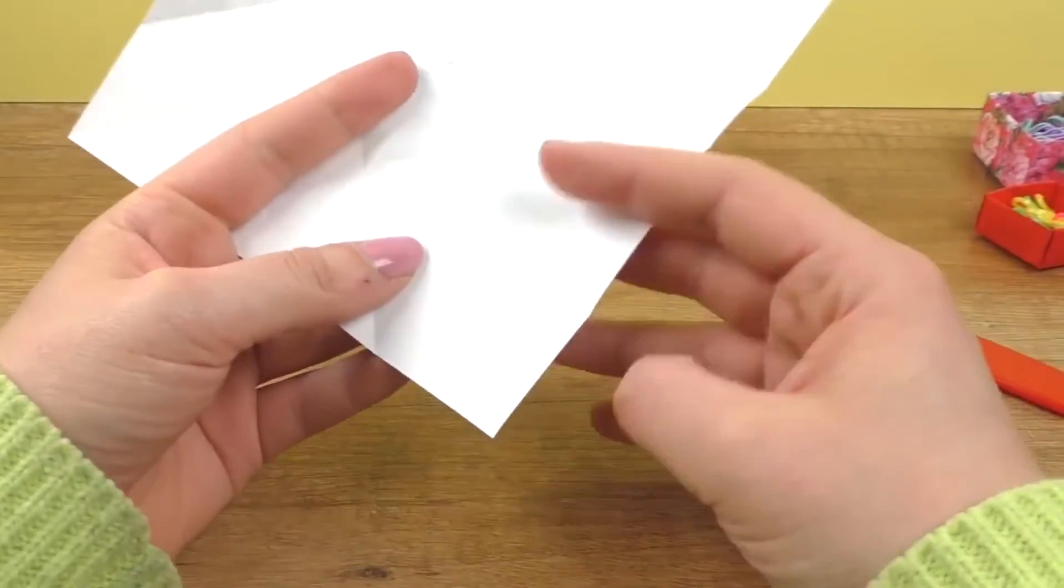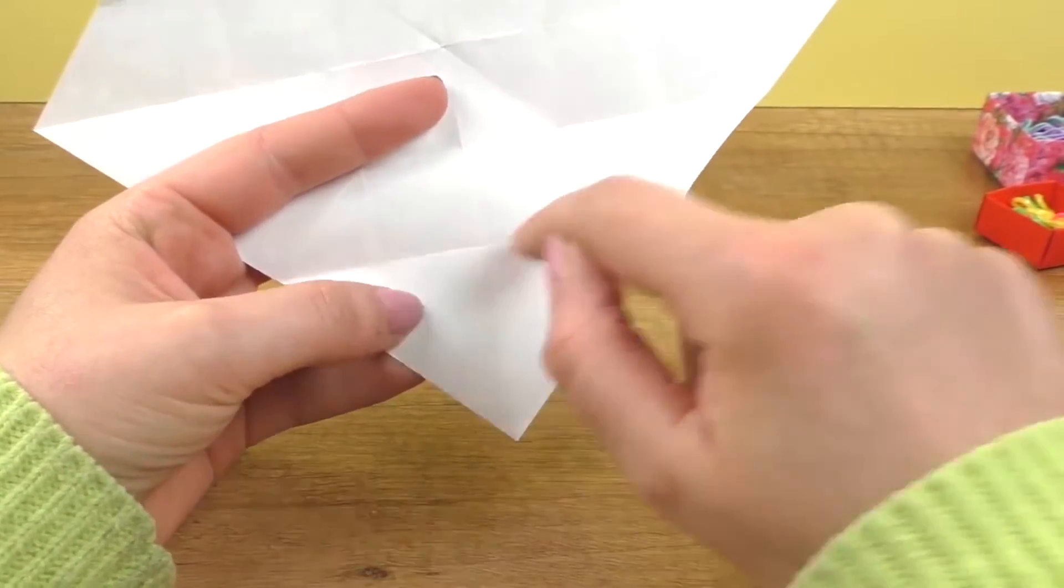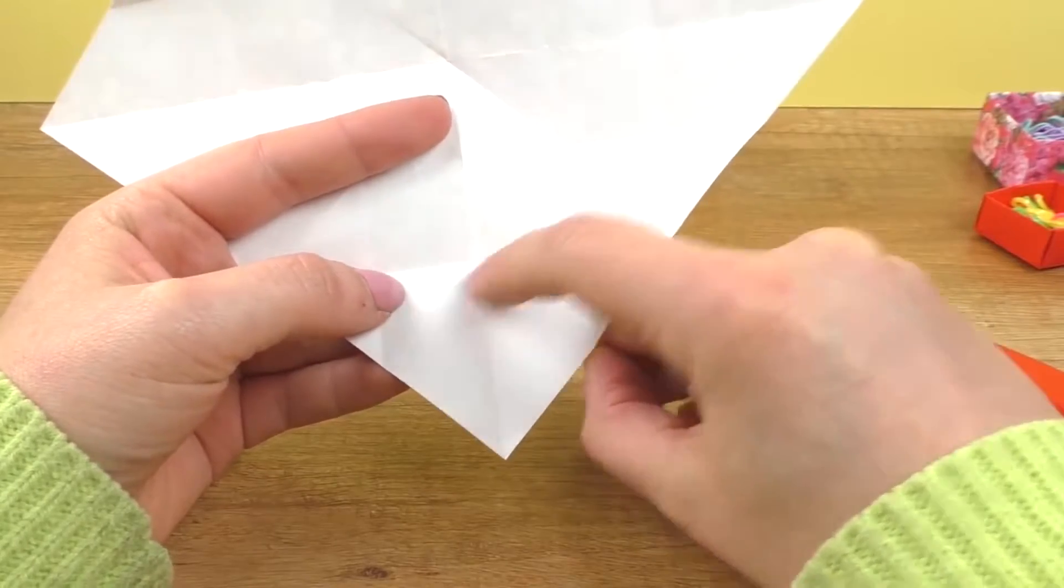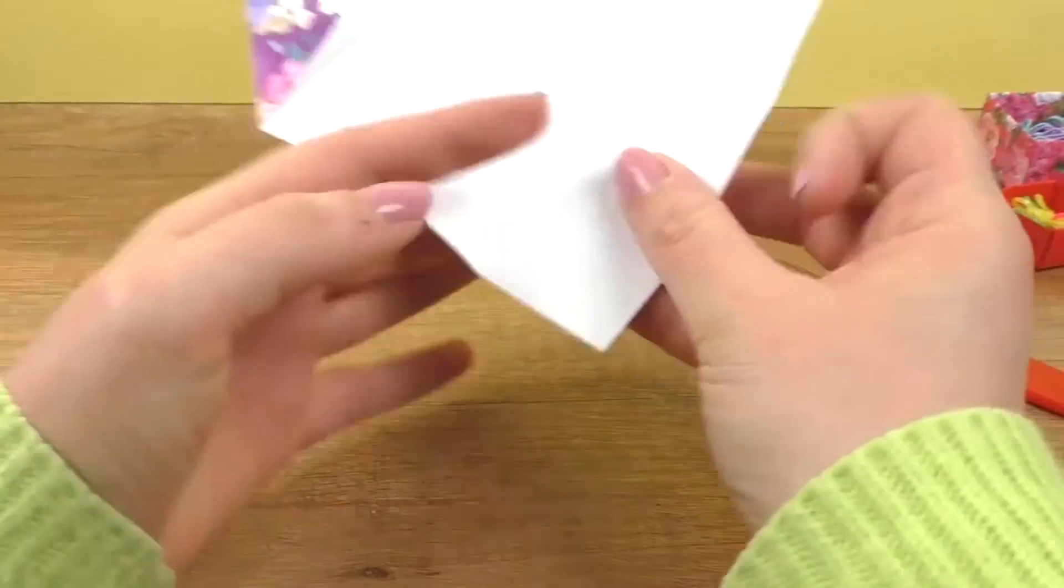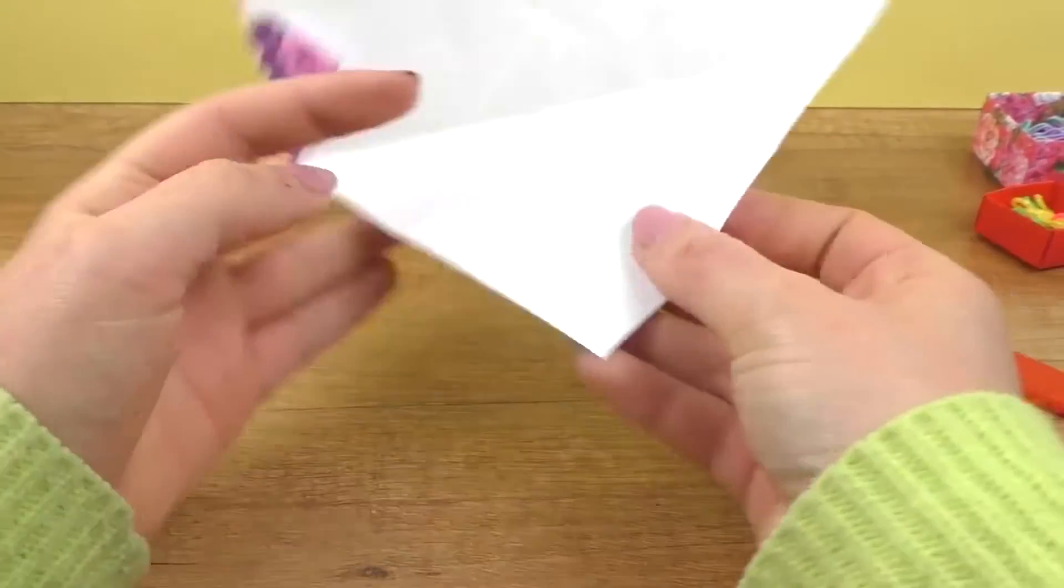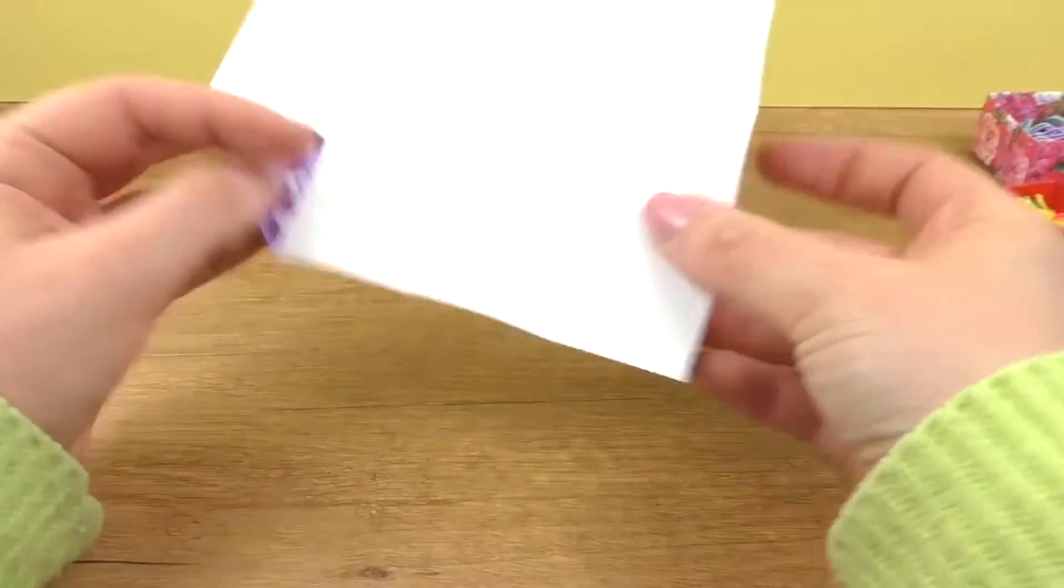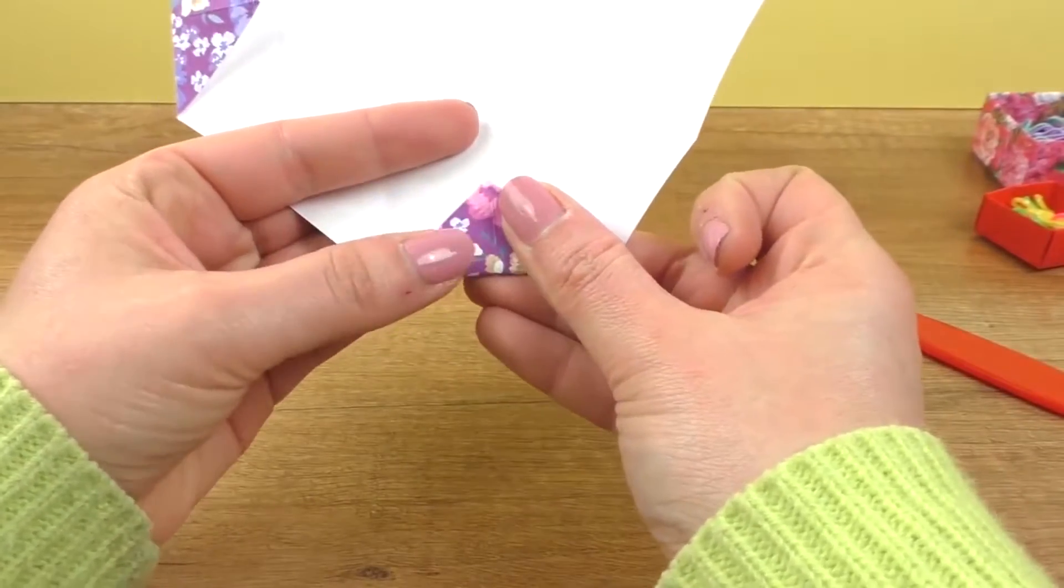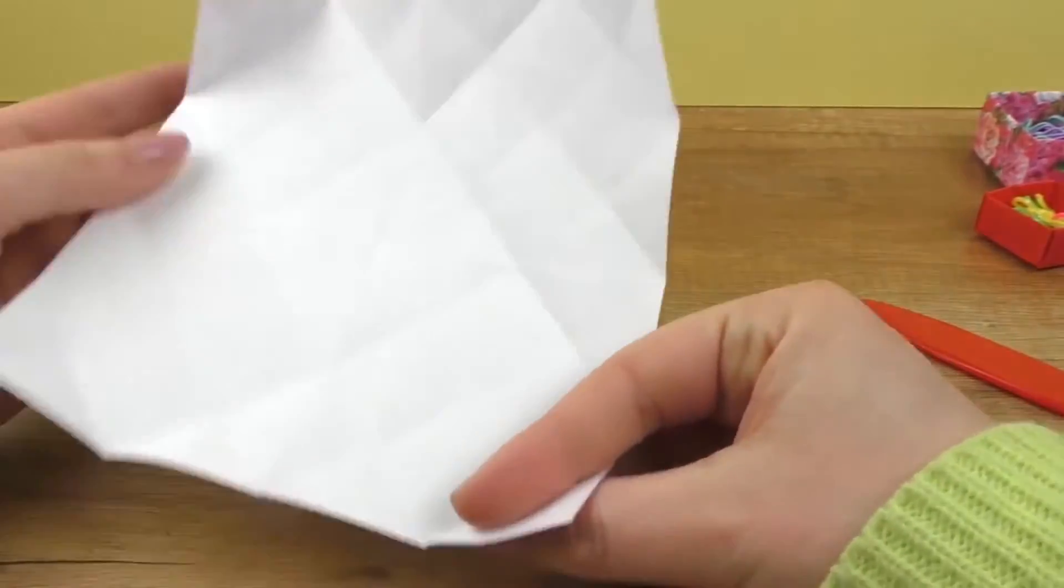So we're almost done, actually. So I'm going to take the corner one more time. Fold it to this line right here. To that point right there. This is almost done, I promise. So we're going to fold all four corners like I showed you. And open them up again.